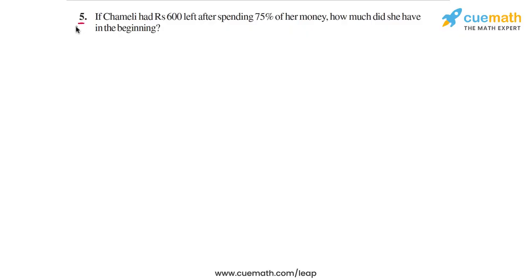In question 5 of this exercise, the problem statement says if Chamelee had Rs. 600 left after spending 75% of her money, how much did she have in the beginning?